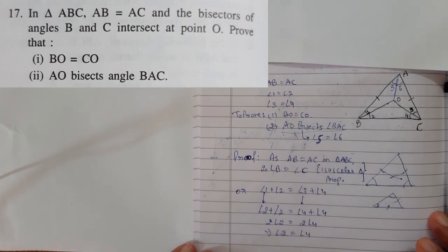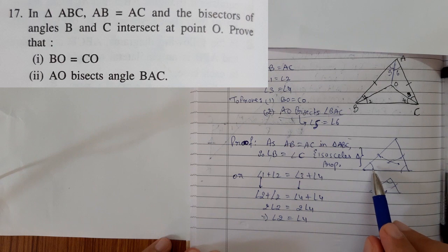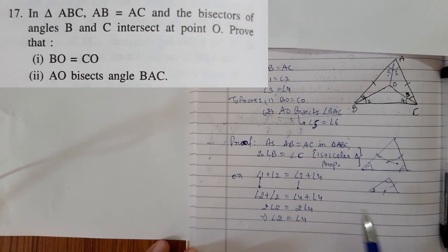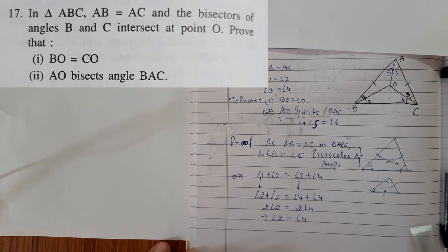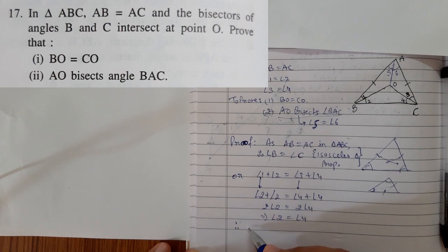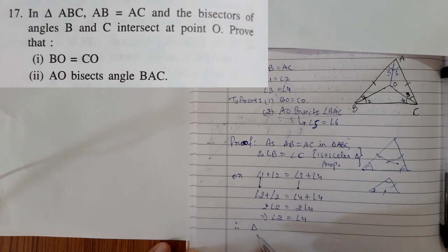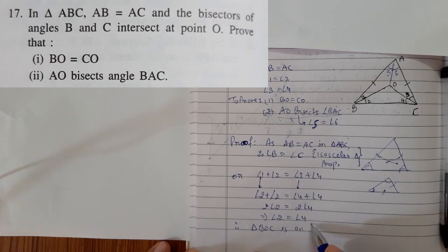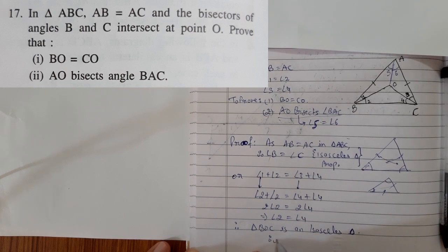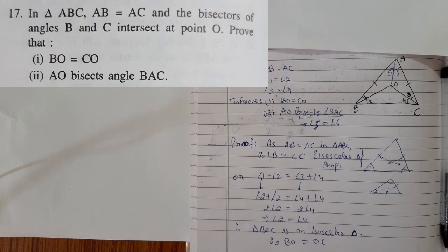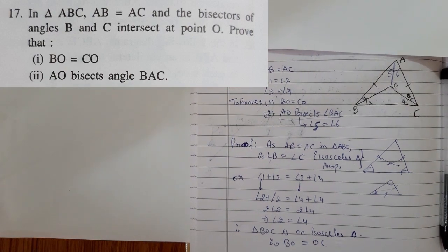So angle 2 equals angle 4. As we have already discussed that if in a triangle two angles are equal, opposite sides are also equal. Isosceles triangle property. It goes vice versa also. Therefore, triangle BOC is an isosceles triangle. Therefore, BO is equals to OC. The first part is done. Let's move on to the next part.